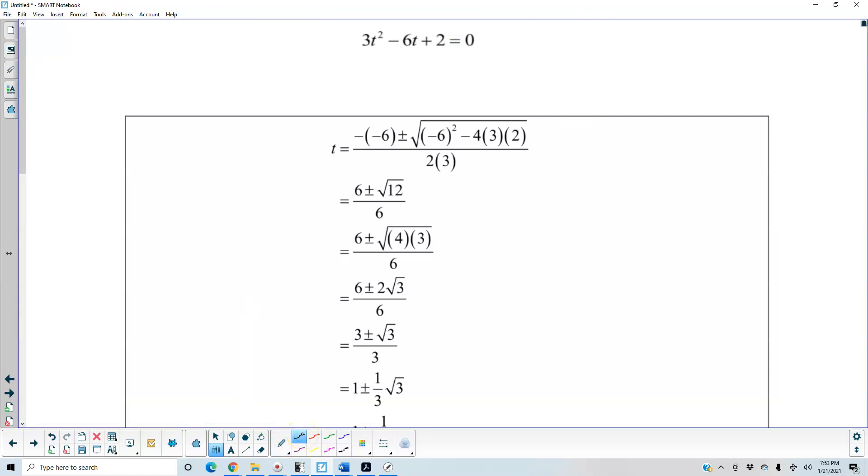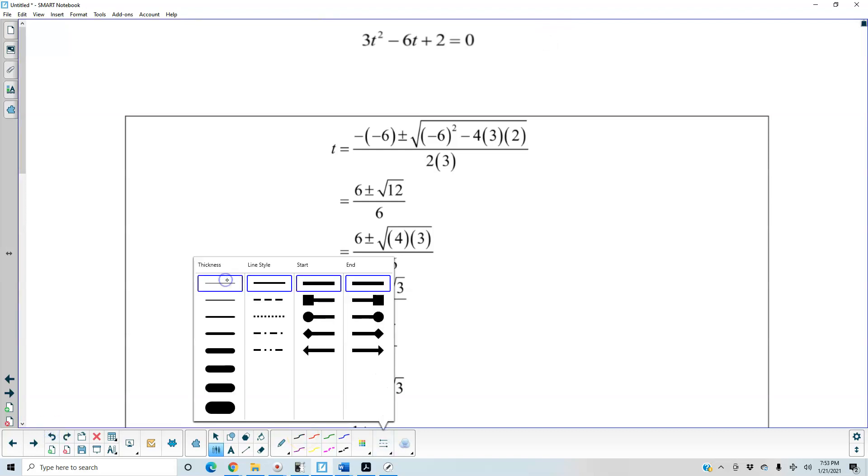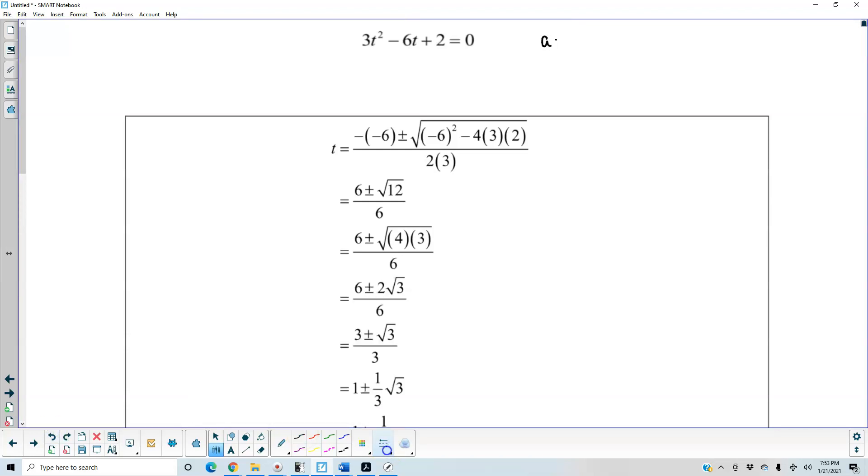So what do we know? We know that the value of a = 3, the value of b = -6, and the value of c = 2. And now we recall that the quadratic formula is -b ± √(b² - 4ac) all over 2a.